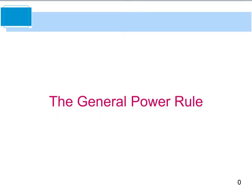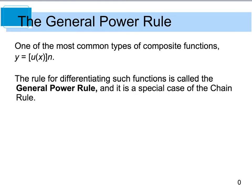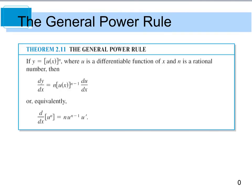We do have a special case of the chain rule called the general power rule, and it's one of the most common types of composite functions you'll encounter. It says that if y equals some function raised to a power n, where u is a differentiable function of x and n is a rational number, then we take the exponent, pull it down up front, raise it to the power of n minus 1, and multiply by the derivative of the inside — exactly what we just did.